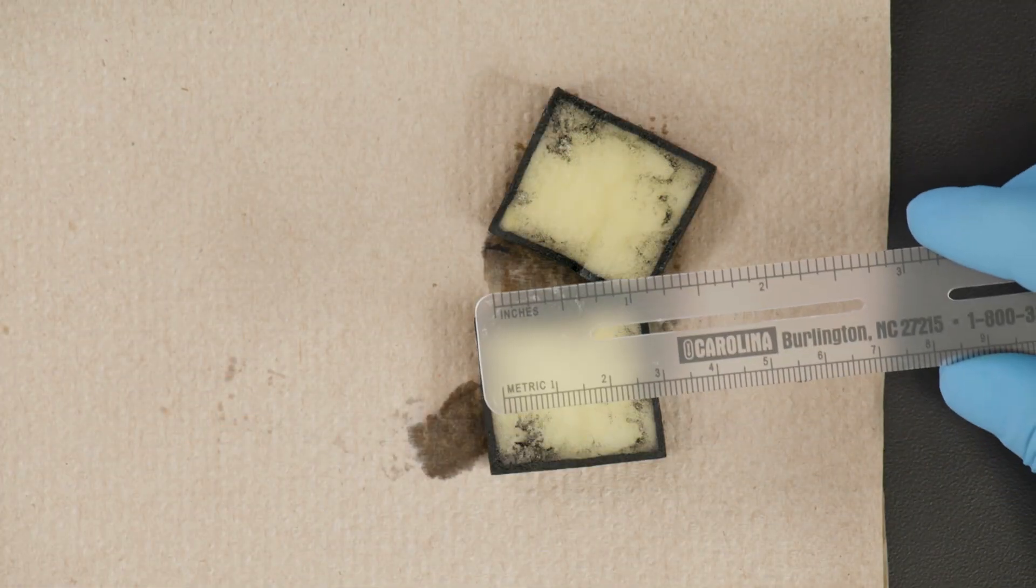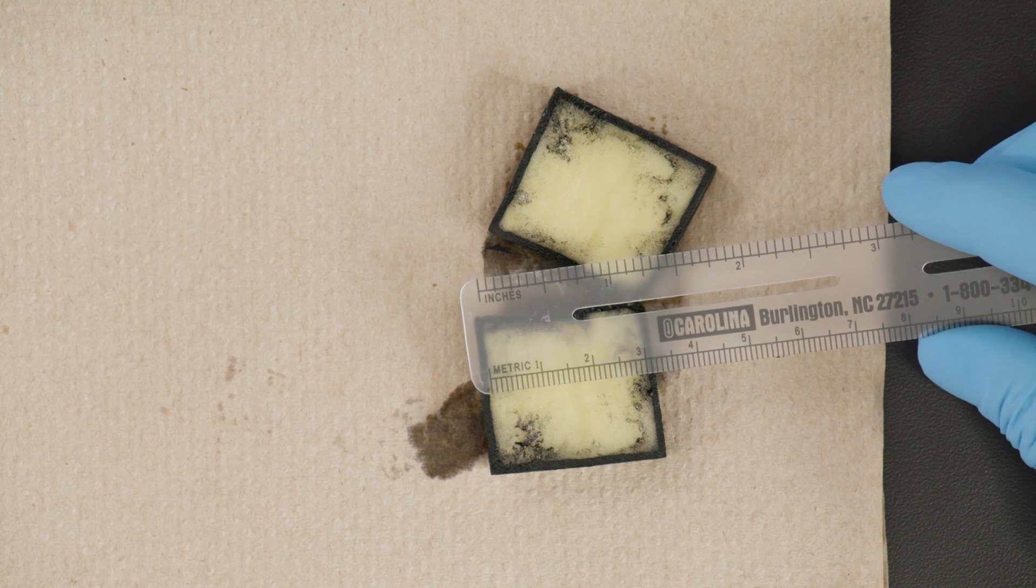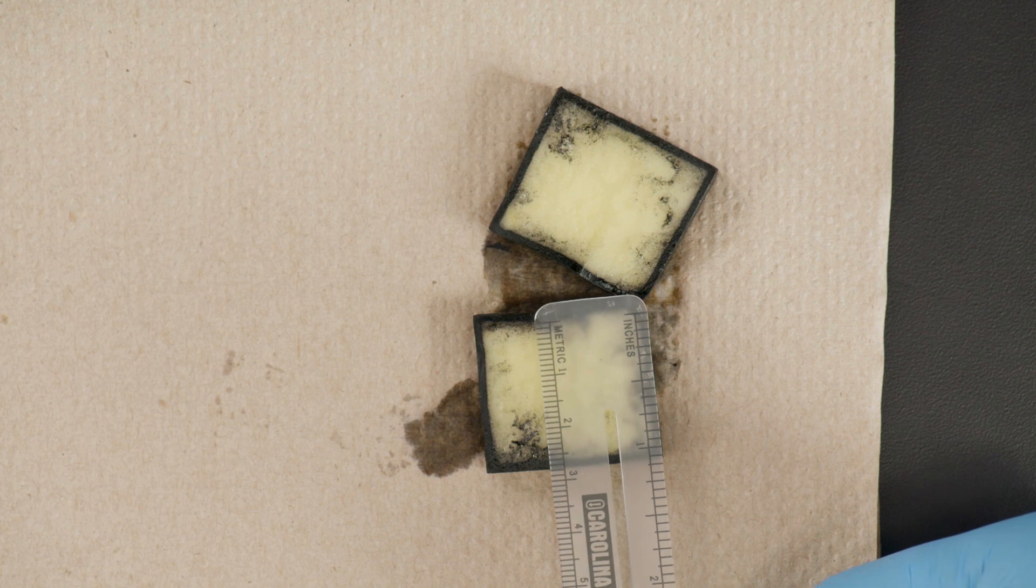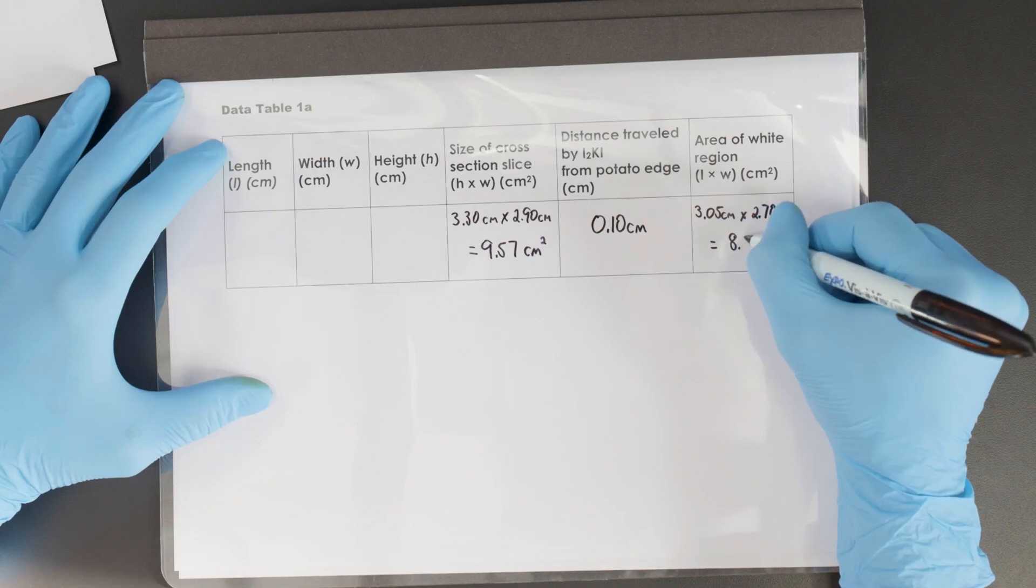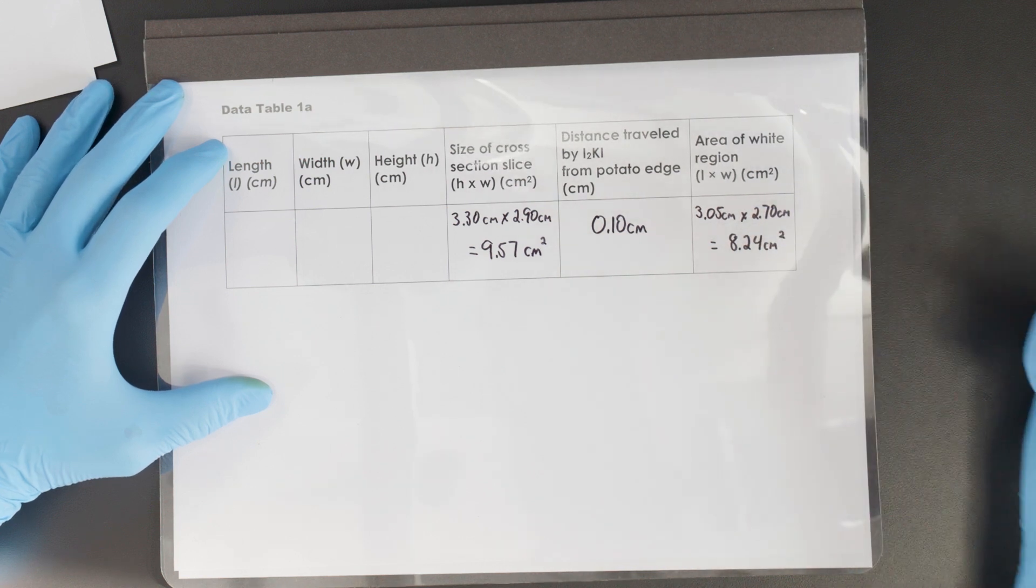The last measurement is the area of the white unstained portion of the block. Measure the two sides of the white center in the same way that you measured the cross-section. Calculate the area of the white center portion by multiplying the length of the first side by the length of the second side.